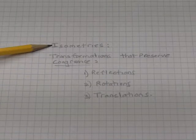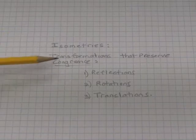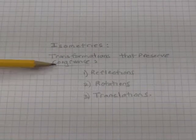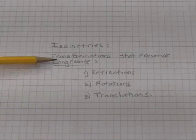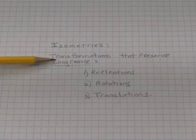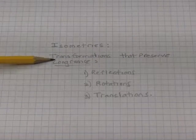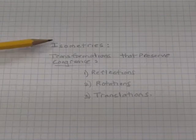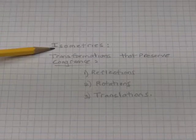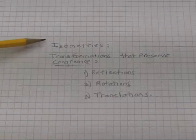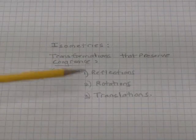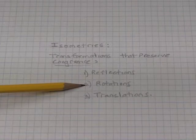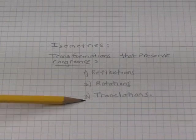Isometries are transformations that preserve congruence. A transformation takes a figure and moves it to its image. Some transformations produce congruent figures, some don't. Isometries preserve congruence. The three isometries we are studying are reflections, rotations, and translations.